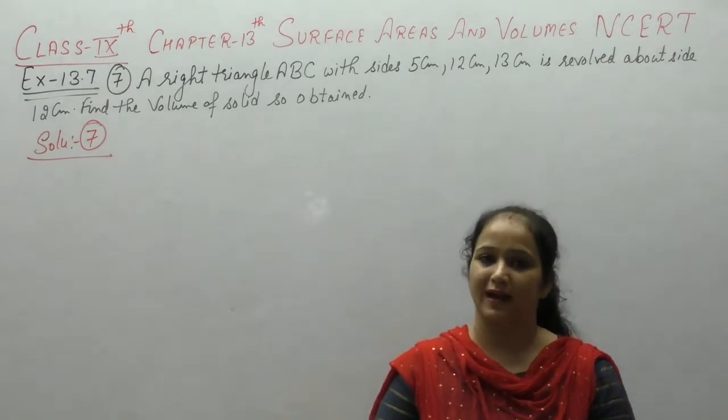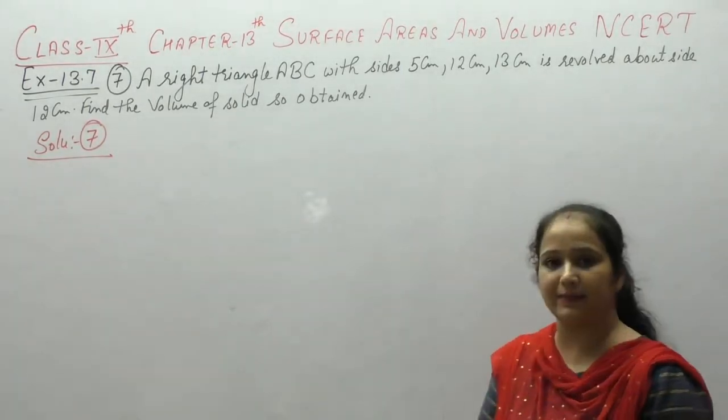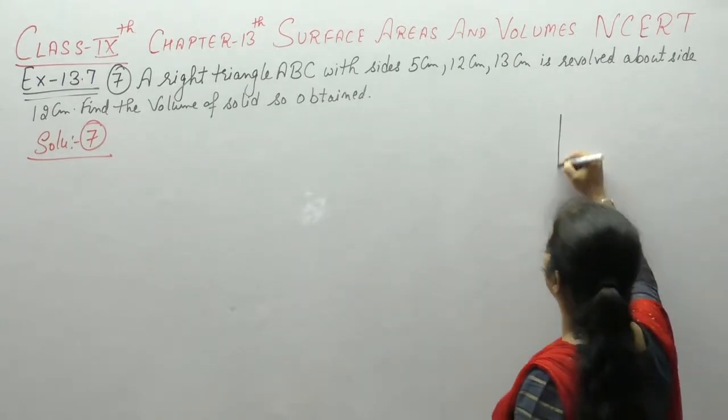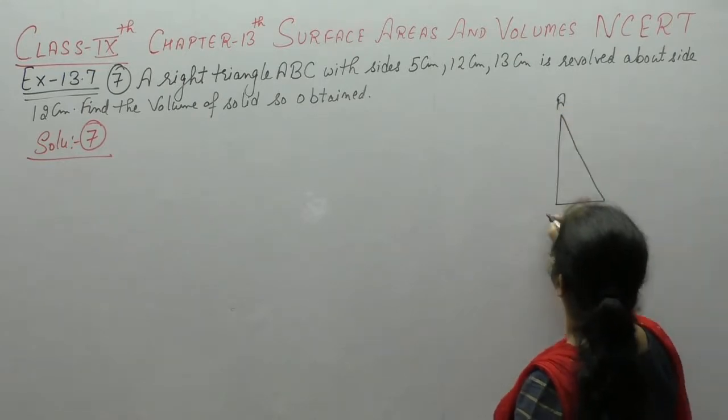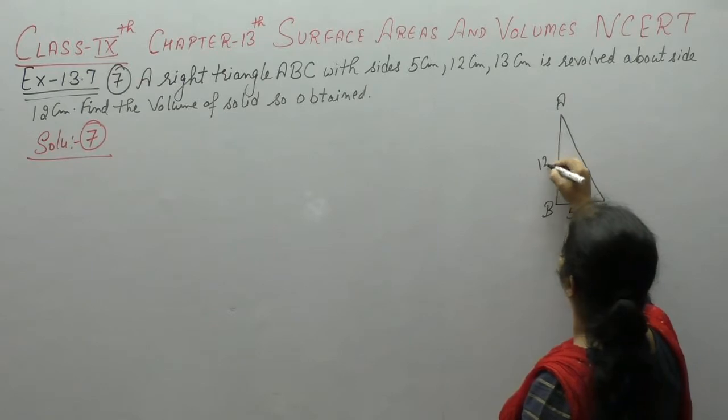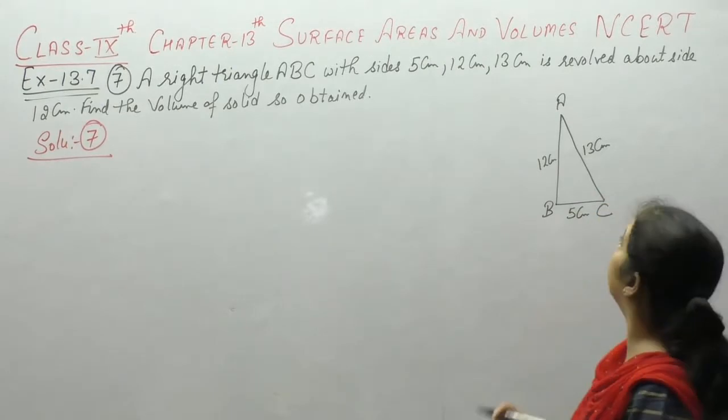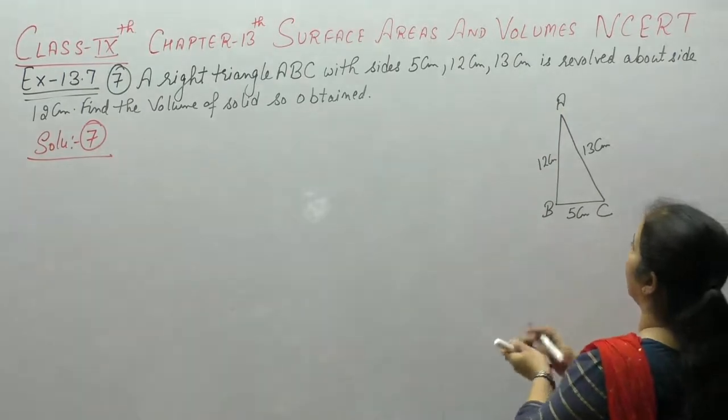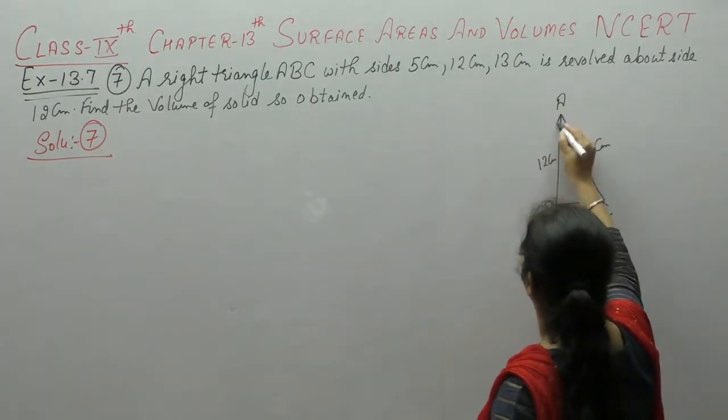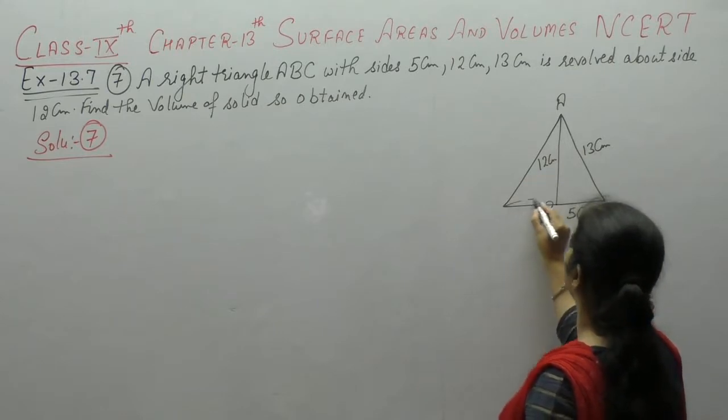Hello students, now start karingi question number 7. A right triangle ABC with sides 5, 12 and 13 cm is revolved about the side 12 cm. 12 cm height ke round is co revolve kia gya hai, is tarah se. To ye kya bana raha eek kone?